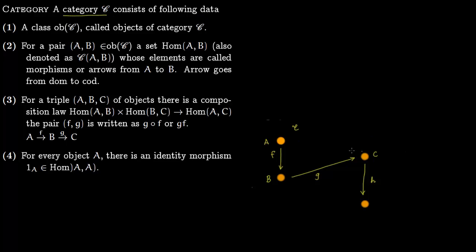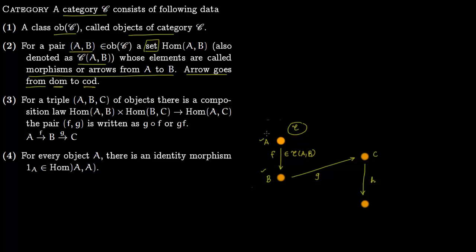A category C consists of the following data. First, it contains a class of objects — for example A, B, C are objects of the category. For each pair A, B we have a set Hom(A, B), also denoted as C(A,B), whose elements are called morphisms or arrows from A to B. So F is an element of Hom(A, B), meaning the arrow goes from domain A to codomain B.